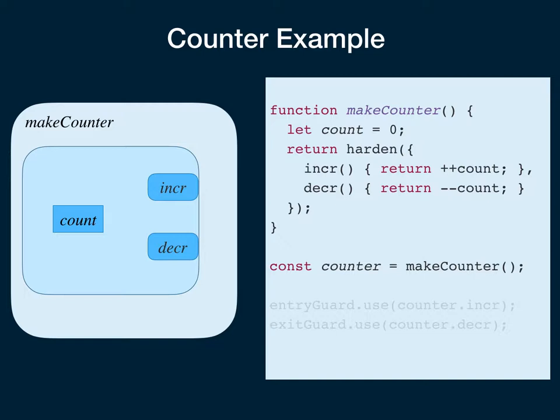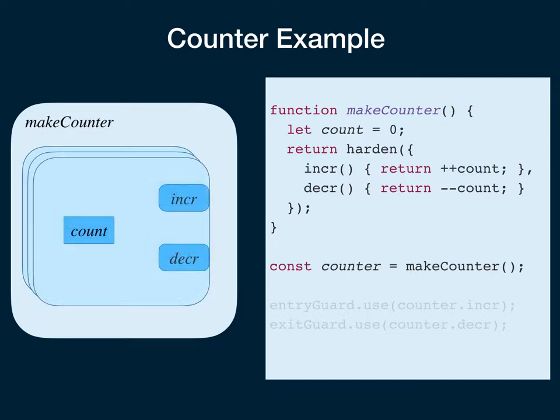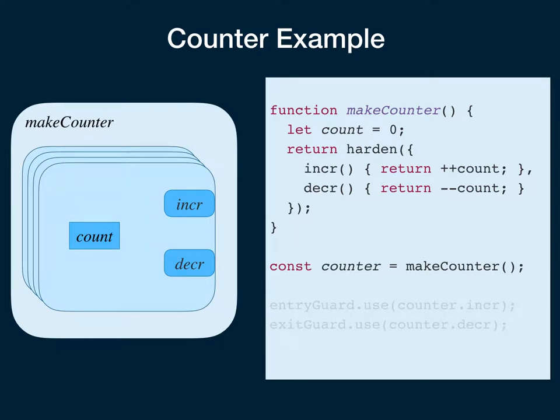This is just an object closure pattern — it's the simplest way to express a secure object. You can do all the same kinds of security with classes with appropriate use of freeze. The basic idea here is this is making a count object that has an increment/decrement method, and the harden function is just an abstraction over object.freeze.